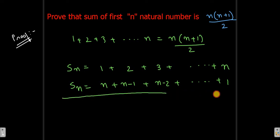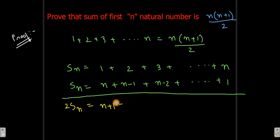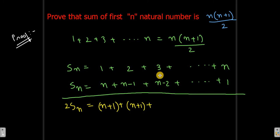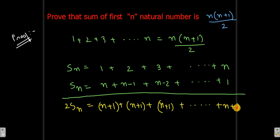Now we will add these two equations. After adding, we get 2S_n. Now 1 + n gives n+1, and n + 1 gives n+1, and n-1 + 2 also gives n+1, and n-2 + 3 also gives n+1, and so on — each pair gives us n+1.